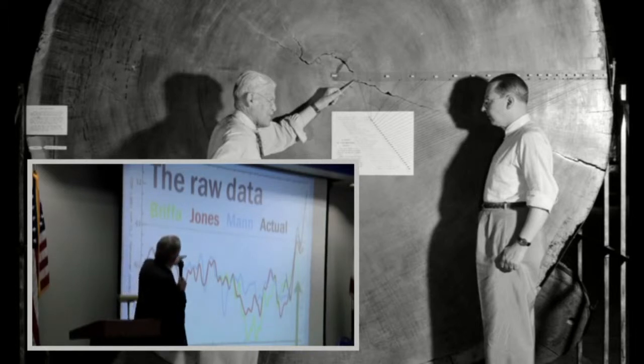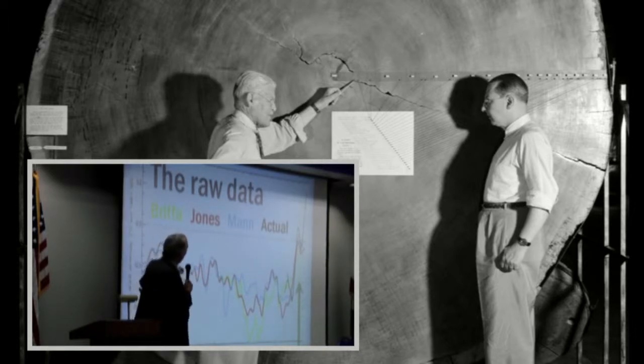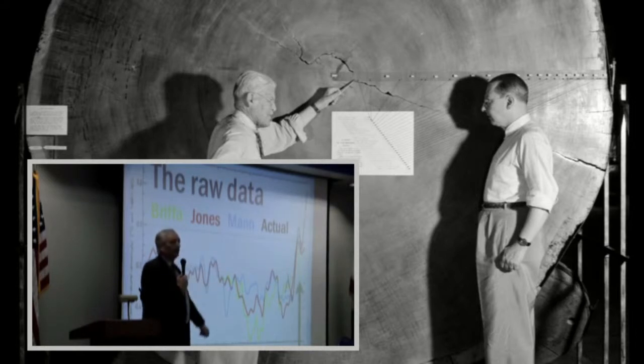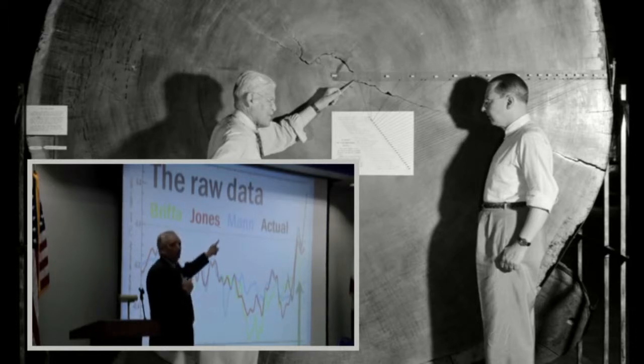Now, the important thing to notice here is the green one from Keith Briffer, which was a few trees from the polar Urals, if I remember rightly. And you will see where the arrow is pointing at the right-hand end of the screen there. And you'll see that the data line has plummeted from 1960 to about 1985. And yet the temperature, actually as measured, is going up.